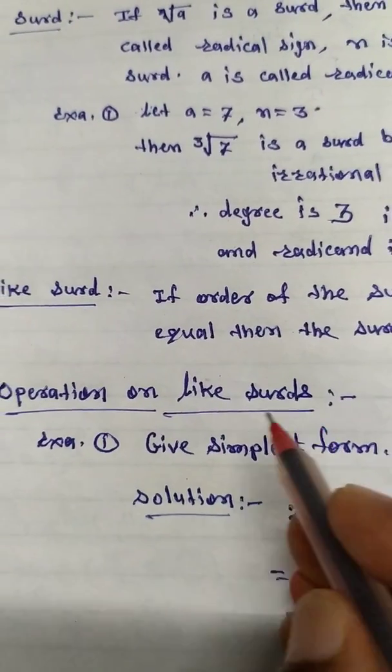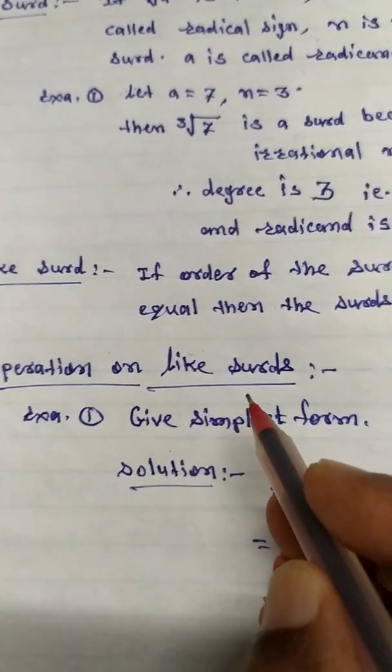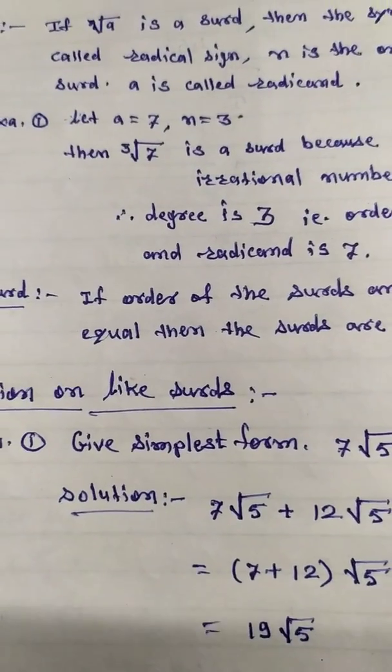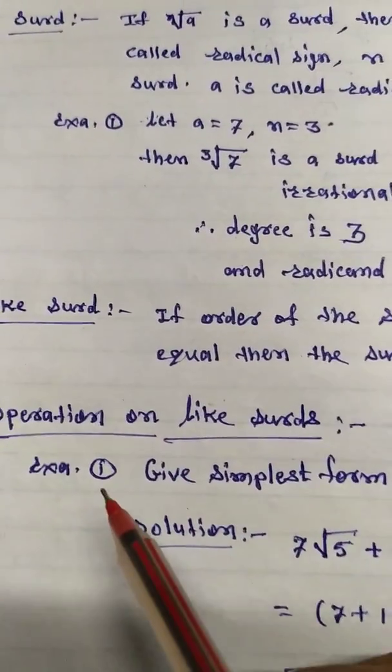Now the operation of like surd, that is addition, subtraction and multiplication, division. Now let us see first example.